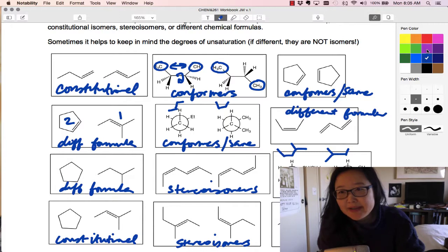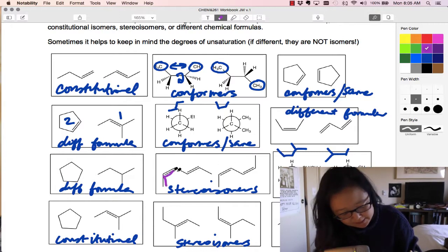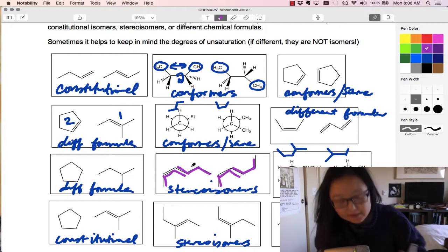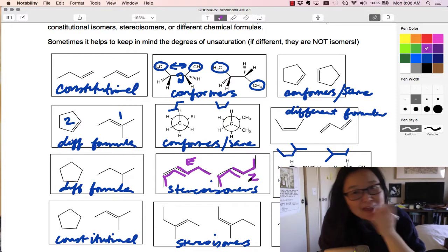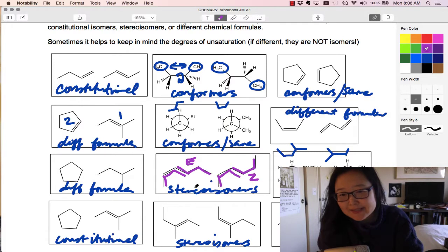Stereoisomers come in now with these double bonds, different configurations. So notice this one here is the same, but then this one here is opposite. So we've got the opposite or opposite, and same side. Okay, so E Z isomers around that double bond. The other one is the same.